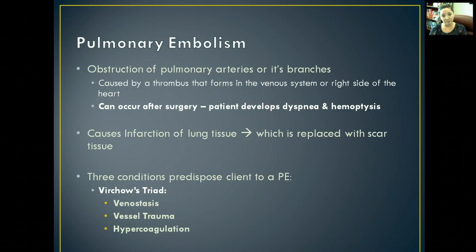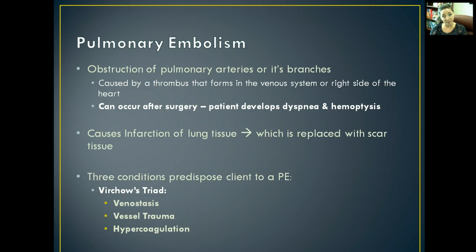Now we're looking at pulmonary embolisms, or PEs. This can develop from any clot anywhere in the body that dislodges, becomes an embolus, and lodges itself in the pulmonary arteries or their branches. It can occur after surgery when the patient develops a clot, maybe in their legs or arms, that dislodges. It causes infarction — a blockage of oxygenated blood flow to a portion of lung tissue — and eventually that lung tissue dies and is replaced with scar tissue, which cannot expand and contract properly.